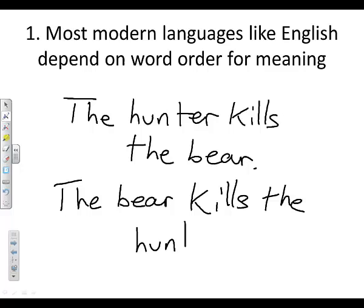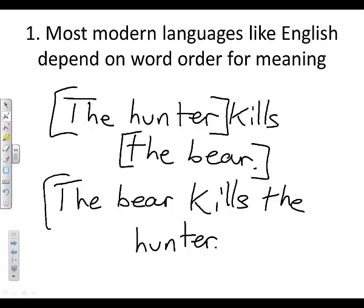How do you know who is getting whom? Well, it's the word order. The hunter comes first and the bear comes after the verb. Here, the bear comes first and the hunter comes after the verb. And that's how we know who is doing what to whom.